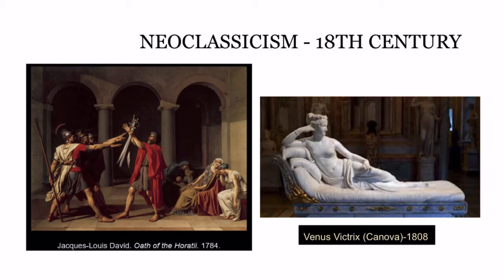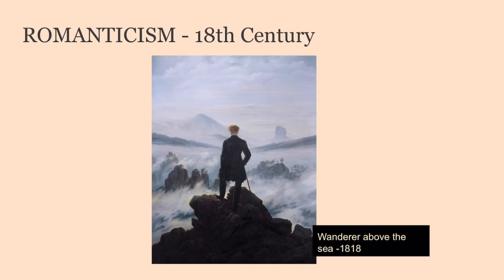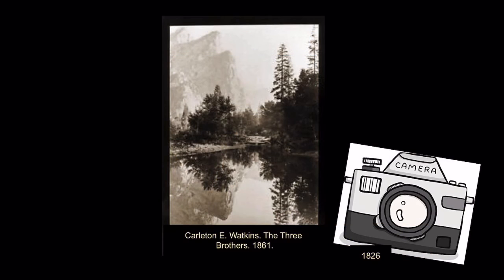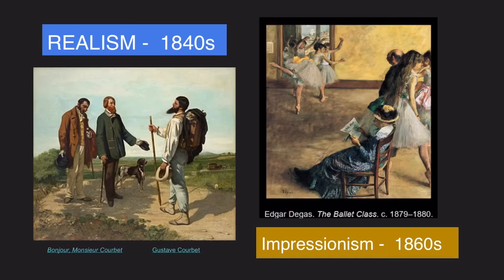The next movement is Neoclassicism, which refers to the emulation of Greek and Roman art. It was believed at this time that art should serve a social purpose. Romanticism is a wave of expression — romantic artists believe that imagination and emotions are most important. Photography was invented in 1826. Next, Realism aimed to focus on unidolized subjects and events that were previously rejected in artwork.